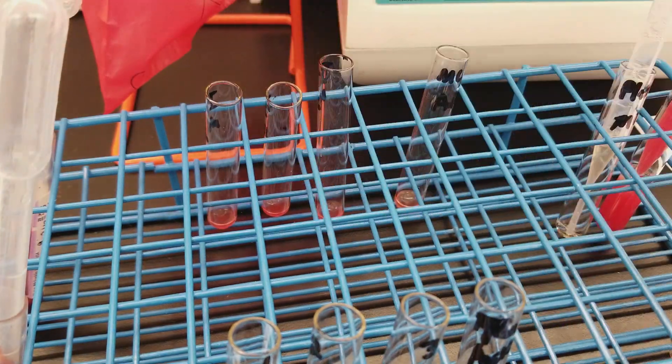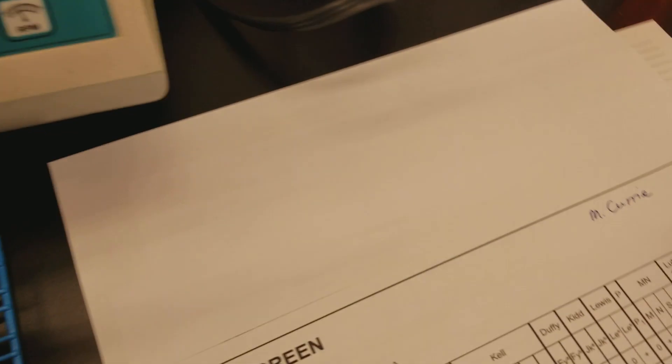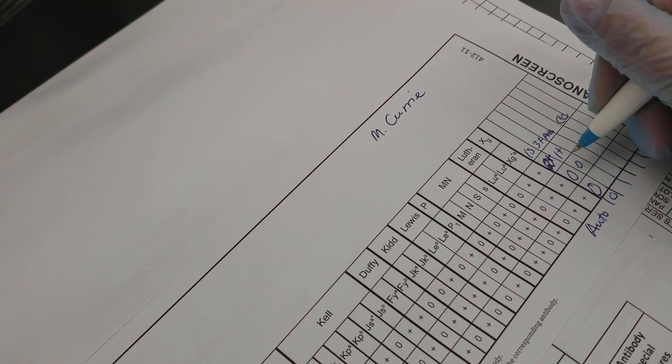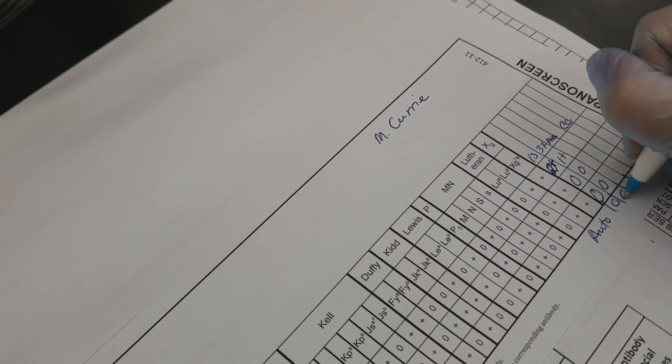So that was cell one for the patient that's positive, so I'm just going to put that it's a one plus. Auto control was negative. Now we'll do the supposed to be negative patient.